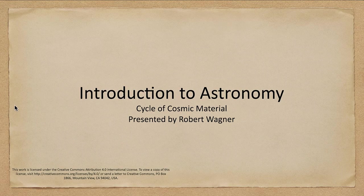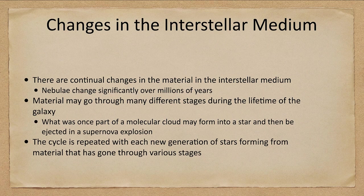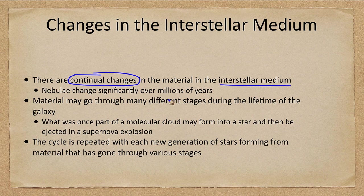Greetings and welcome to the introduction to astronomy. In this lecture we are going to talk about the cycle of cosmic material and how the interstellar medium is changed over time. There are continual changes in the material in the interstellar medium. Nebulae can change significantly over millions of years, and the content and composition of the interstellar medium would not be exactly the same.